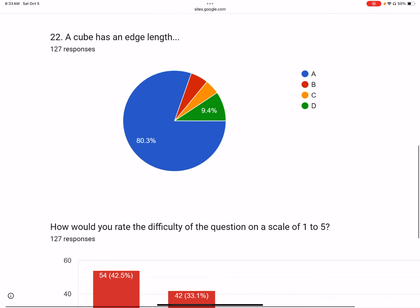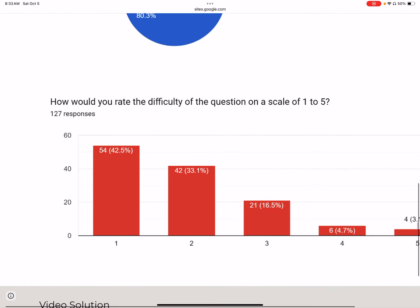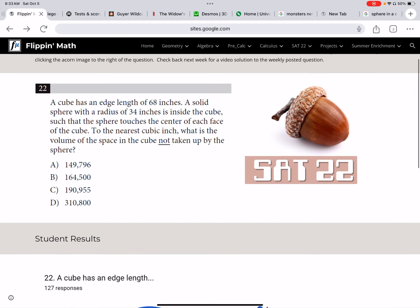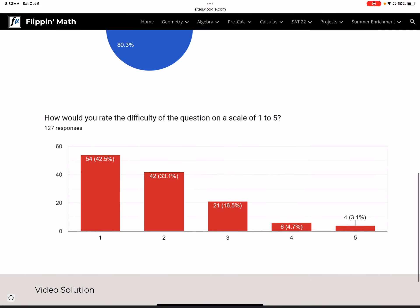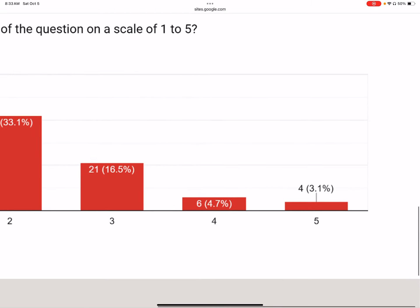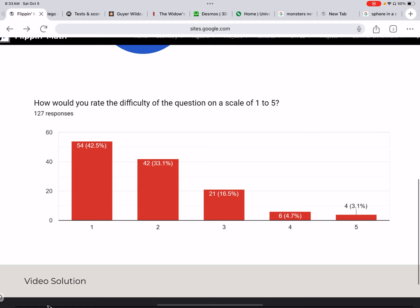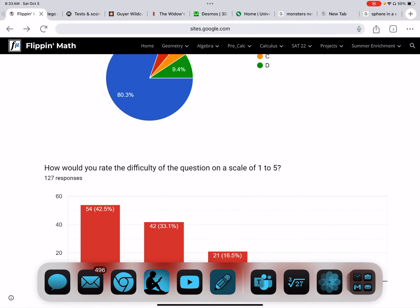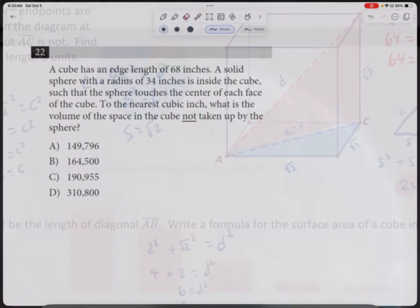Before we do that, let's look at your difficulty rating. Most of us believe that this skewed heavily towards being an easy question, especially for question number 22. Easy to medium, where a handful, just a small handful of us thought that it was a hard question. So let's get into the actual solution here, which has to do with volume.